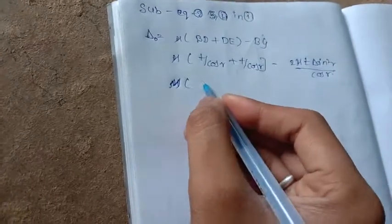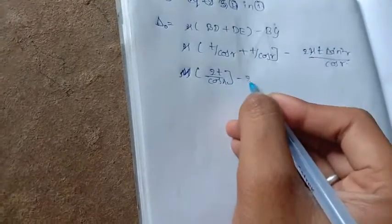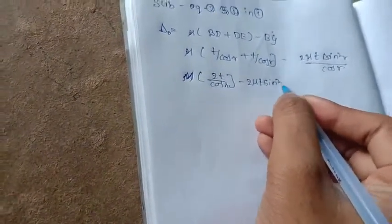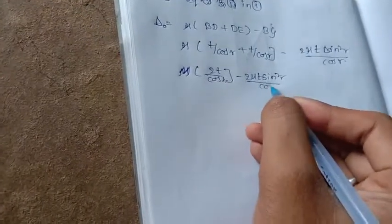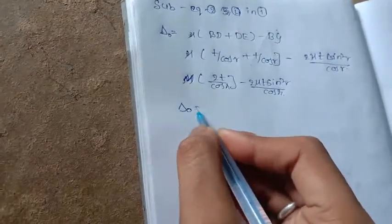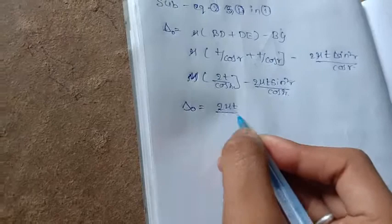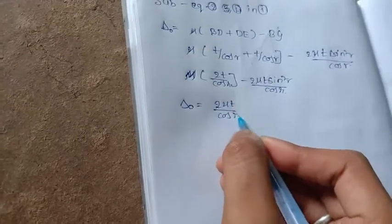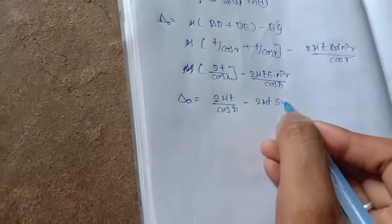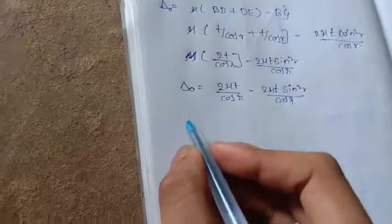μ into 2T cos R minus 2μT sine square R by cos R. Delta equal to 2μT by cos R minus 2μT sine square R by cos R.